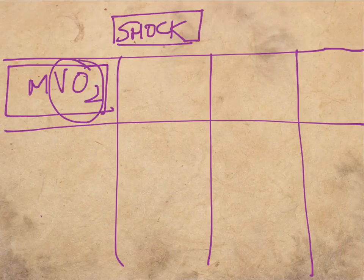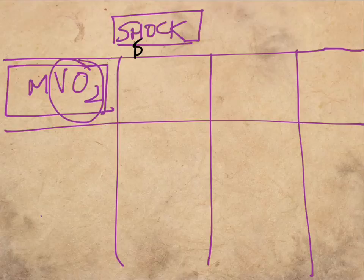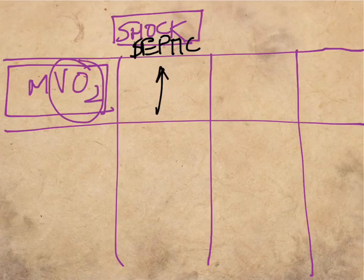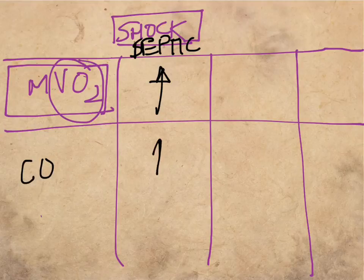Now, let's look at this. Because if you have a septic shock, like we discussed, the MVO2 is going to increase because the cardiac output is really high.